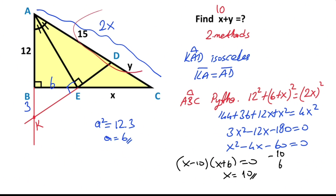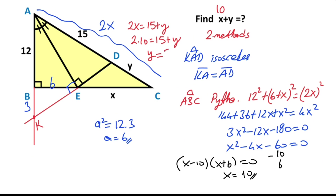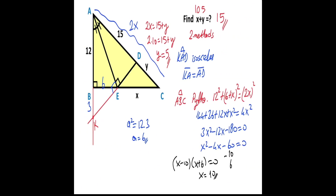Notice that 2x equals 15 plus y. That means 2 times 10 must equal 15 plus y. So y must equal 5 units. That means the sum of x and y equals 15 units.